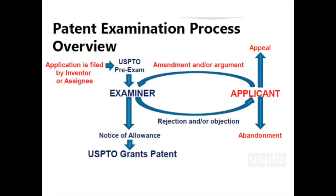Part of what takes patents so long to be approved is that they must go through an examination process, and there are thousands of patents filed every day, so examiners often have many to go through. The process involves a back and forth between the applicant and examiner, which may include a number of rejections or objections to parts of the application. Sometimes examiners will even talk with an inventor on the phone to explain their reasoning. The result is either a final allowance — a granted patent — or an appeal by the applicant for a final rejection, or the application could just be abandoned by the inventor.